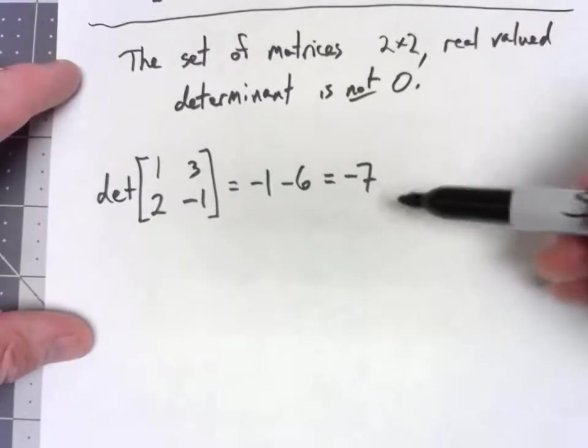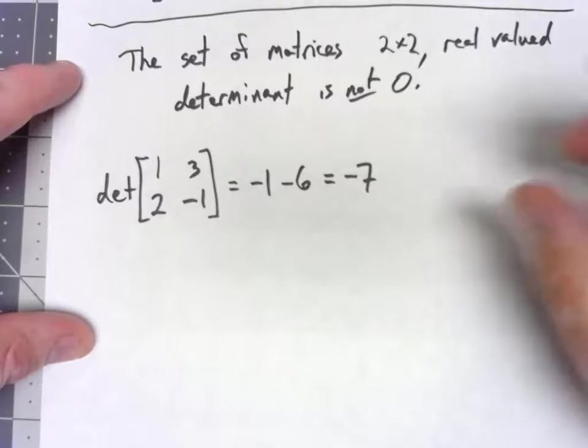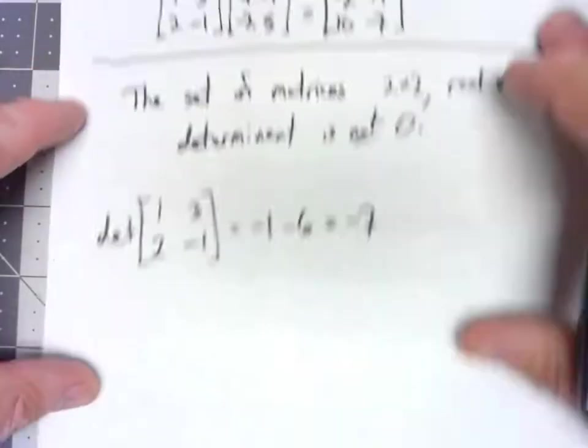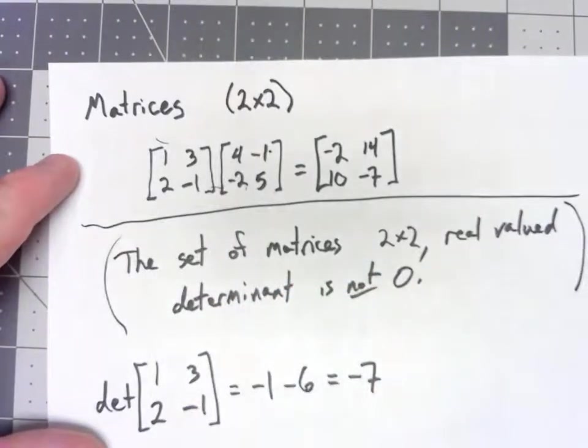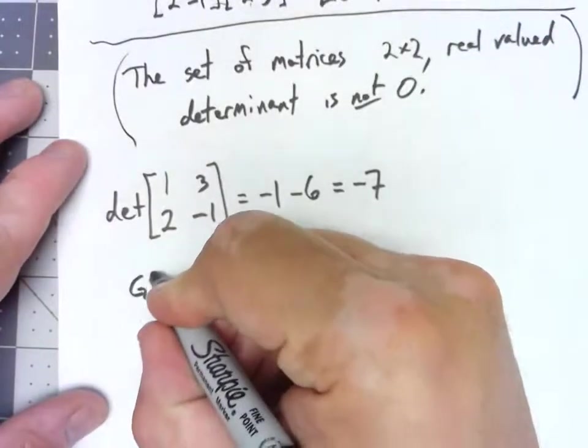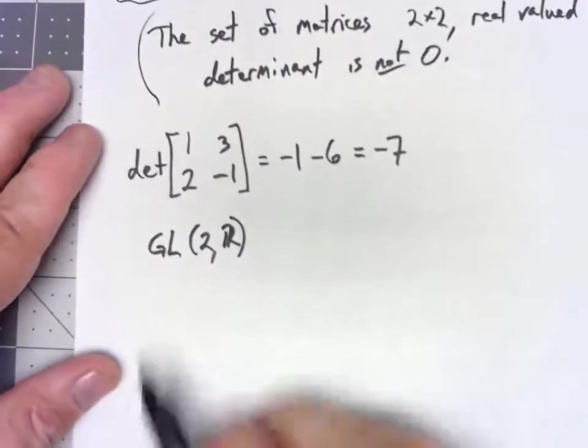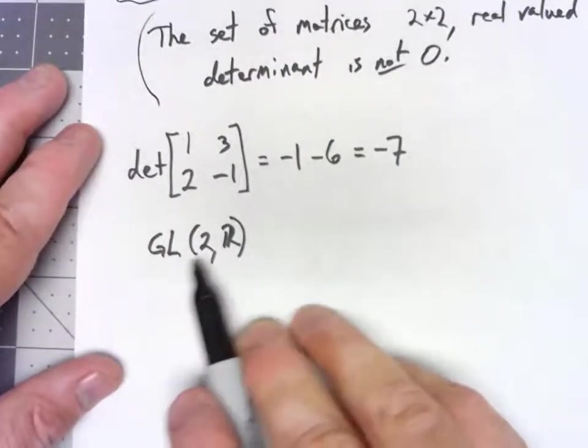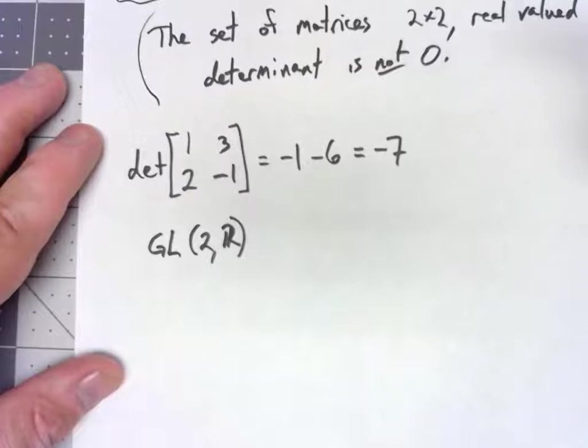The most important thing about that determinant is that if the determinant is zero, the matrix is not invertible. So we're going to call this set, the set of 2 by 2 real valued matrices whose determinant is not zero, we're going to call that set GL(2,R). The 2 has to do with the size of the matrix. The R has to do with the fact that we've got real valued entries.